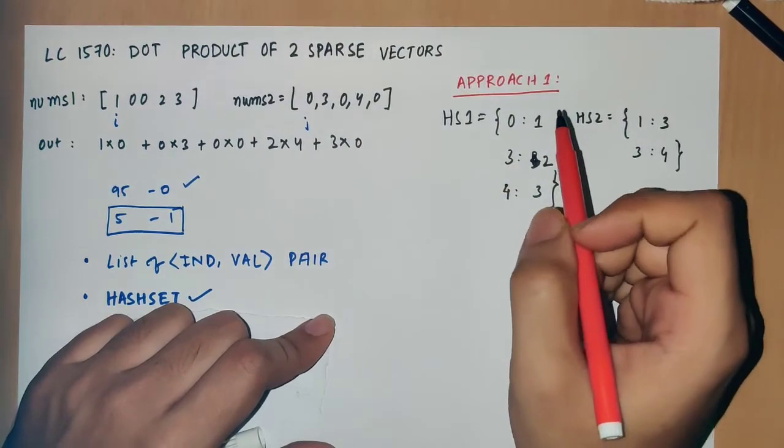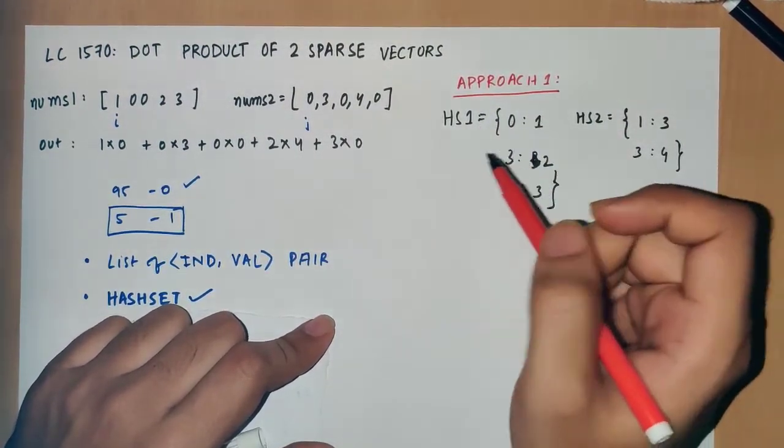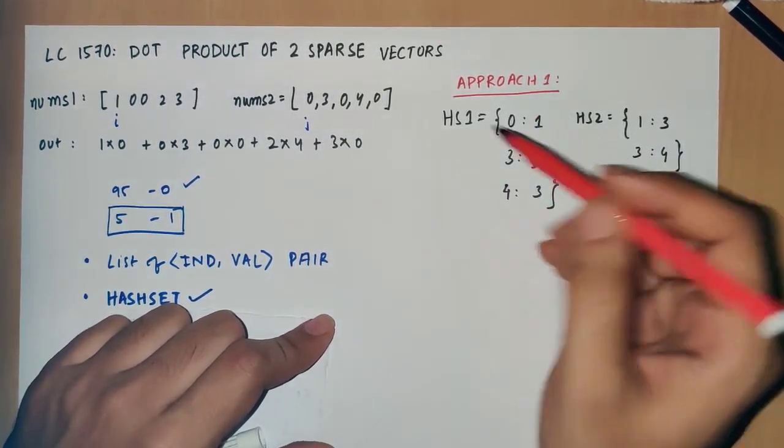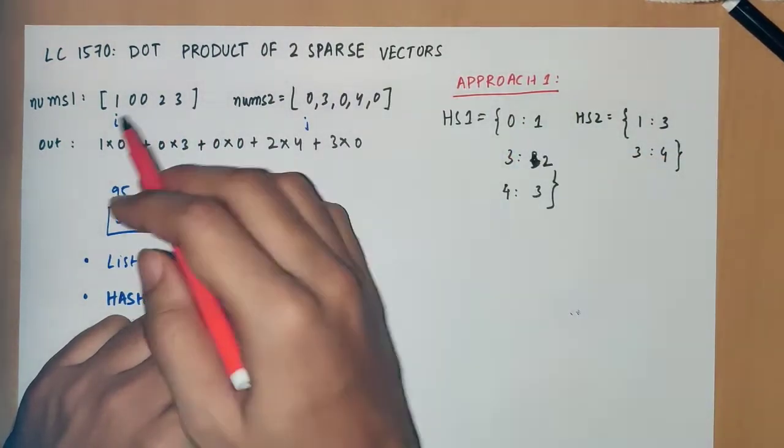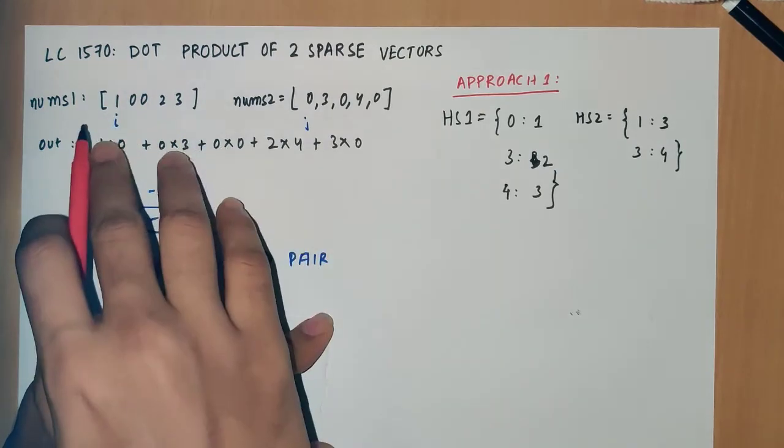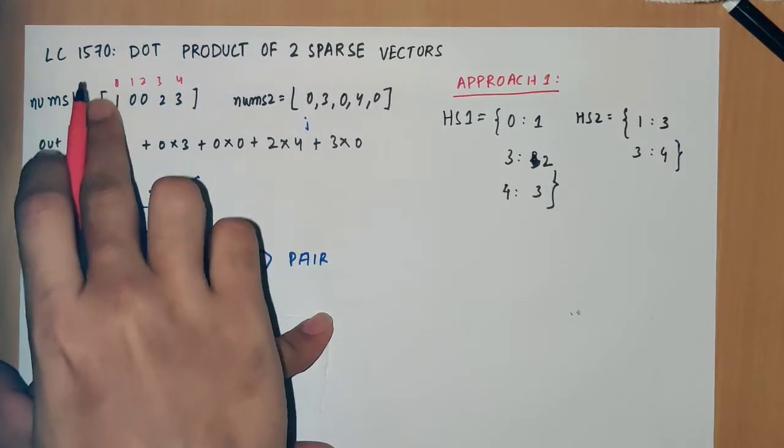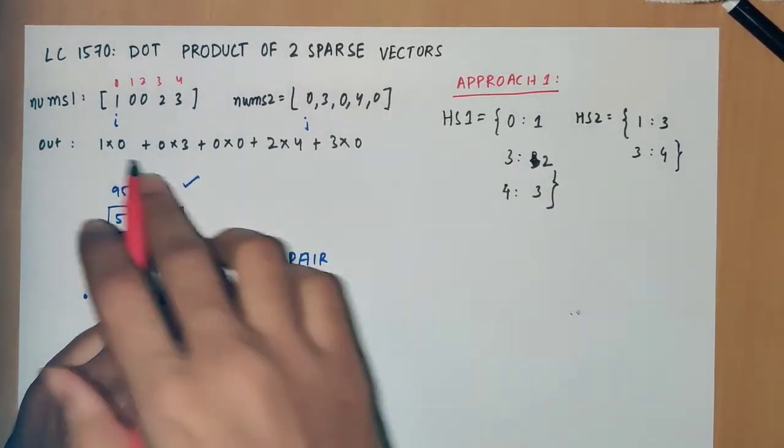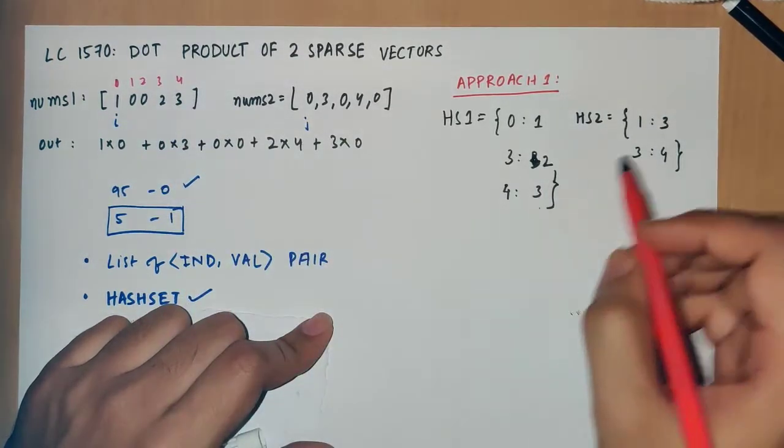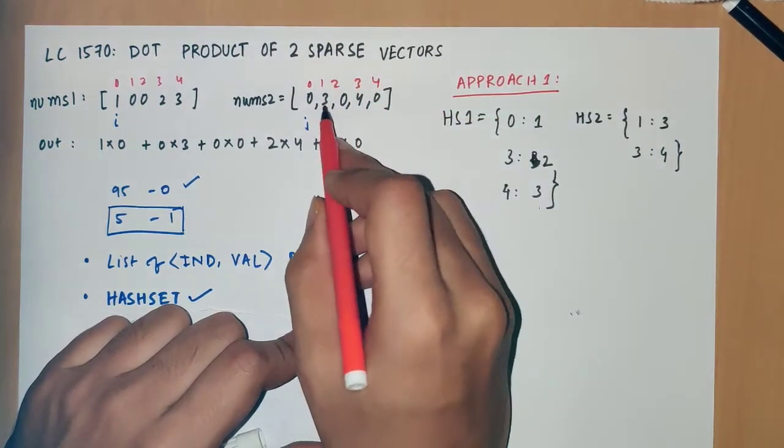We need to consider hashset and store the index to value pairs. In the first array, at the zeroth index the value is 1, at the third index the value is 2, and at the fourth index the value is 3. For the second hashset, at the first index it is 3, and at the third index it is 4.